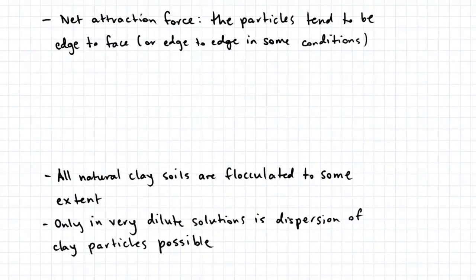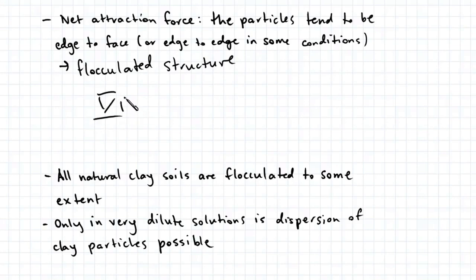If there is a net attraction force in the clay, the particles will tend to have an edge-to-edge orientation, and this is known as a flocculated structure. In a diagram, a flocculated structure would look something like this.